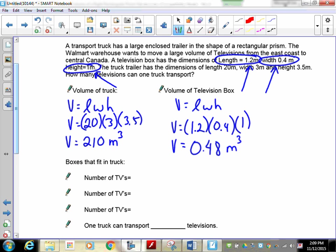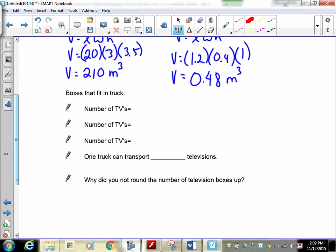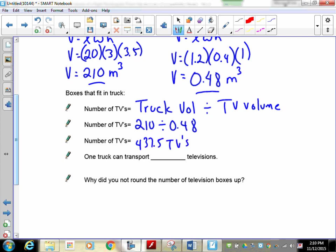Now we need to find out how many boxes or how many televisions can fit in one truck. We have to figure out the number of TVs that will fit in. To do that, we have to take the volume of the truck and divide it by the TV volume. How many 0.48 will fit in 210 cubic meters? So you're going to have 210 divided by 0.48. Doing the calculations, that gives you a weird number: 437.5 TVs.